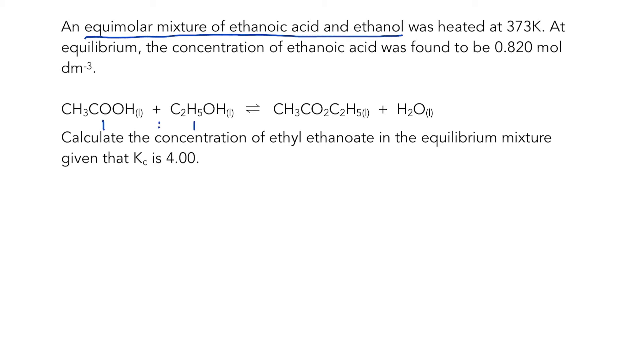At equilibrium, the concentration of ethanoic acid was found to be 0.820 mole per decimeter cubed. So at equilibrium, I know the concentration of the ethanoic acid, and I want to find the concentration of the ester, ethyl ethanoate.